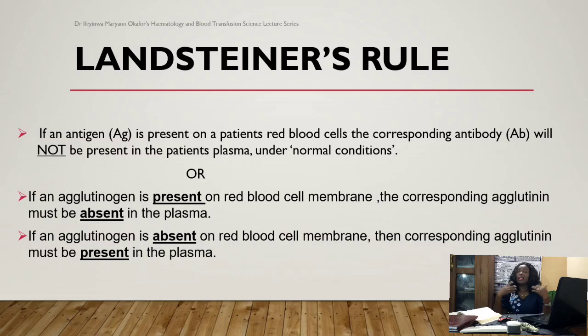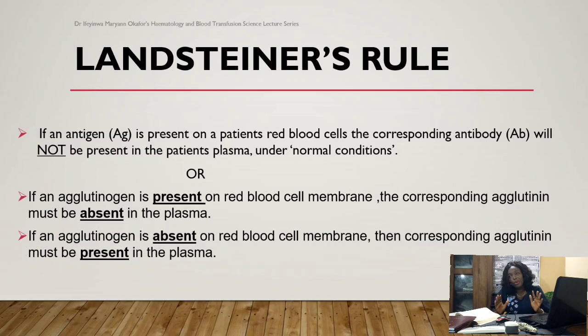Subsequently, subgroups like A1, A2, A1B, and A2B were discovered by Ludwig Hirszfeld and his co-scientists. Landsteiner proposed a rule that actually helps us to understand the ABO blood group system better. It is a simple rule that, if you are able to understand it, will help you to know what is going on in the ABO blood group system.